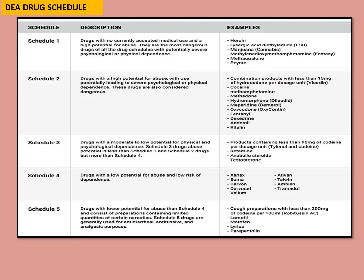This is called DEA drug scheduling. Based on the addictive potential or habituation of the drug, we have different schedules. Schedule 1 has the highest abuse potential — drugs like heroin, marijuana, lysergic acid, and LSD. Schedule 2 drugs have high potential for abuse but less than Schedule 1. You have to remember which drugs come under every schedule.